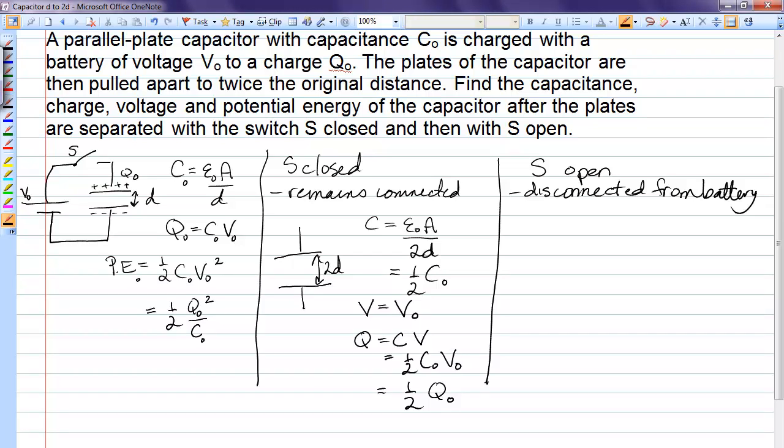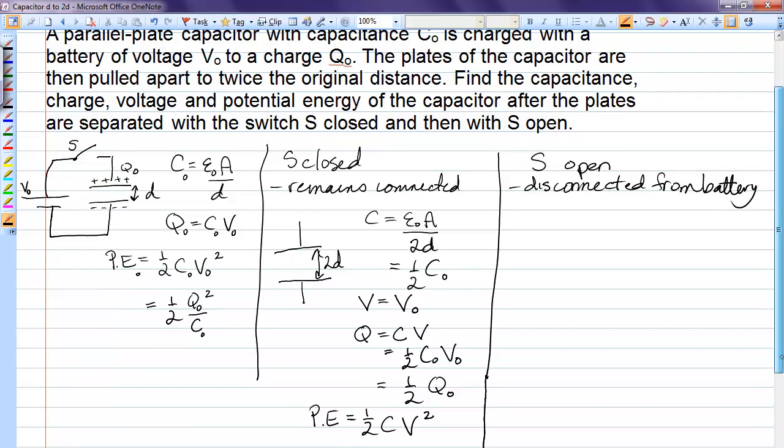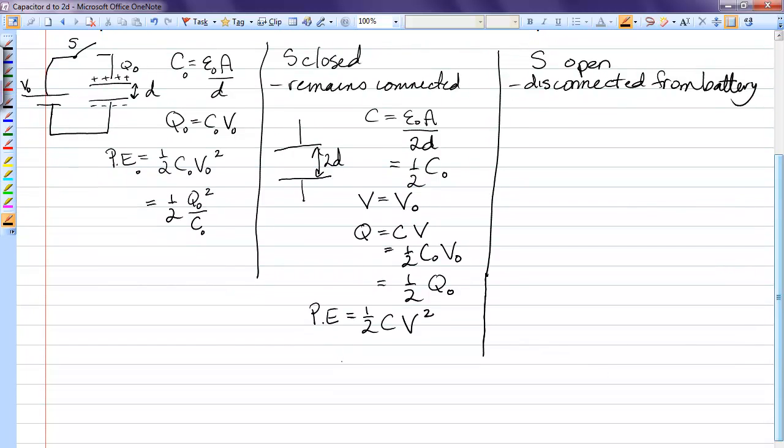Now, the potential energy, the most convenient one to use is the one where voltage is constant. So, I'm going to use one half Cv squared to find the potential energy after the plates have been separated. Subbing in half of C0 for C and V0 for V, I see that my potential energy is now half the original potential energy.